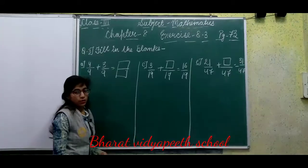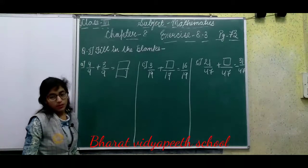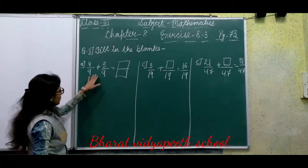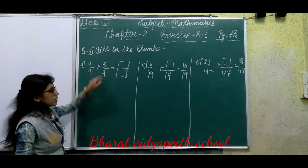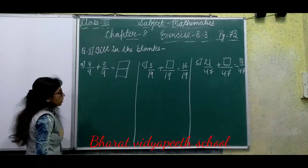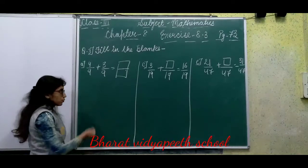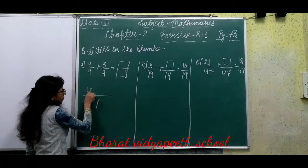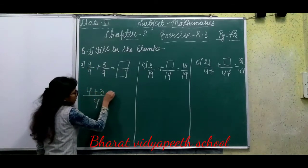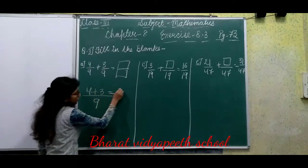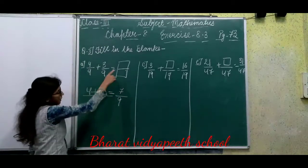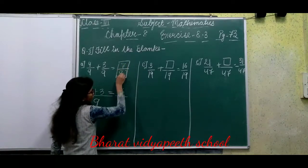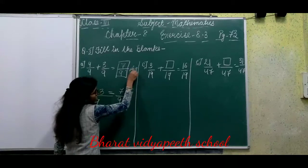Now Question 3: Fill in the Blanks. We need to fill in the blanks. See Part A: 4 upon 9 plus 3 upon 9 equals blank upon 9. We solve this: denominator is 9, numerators 4 plus 3 equals 7. So the blank will be filled with 7 upon 9. A part is solved.